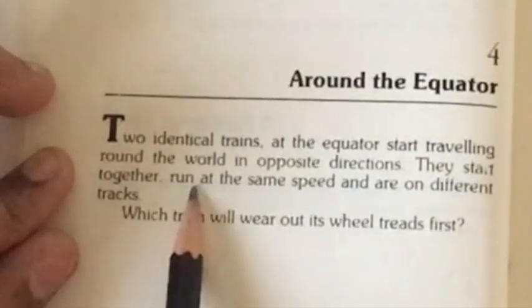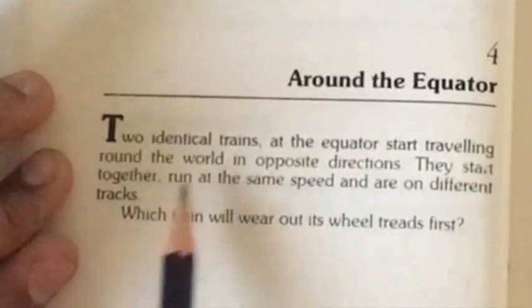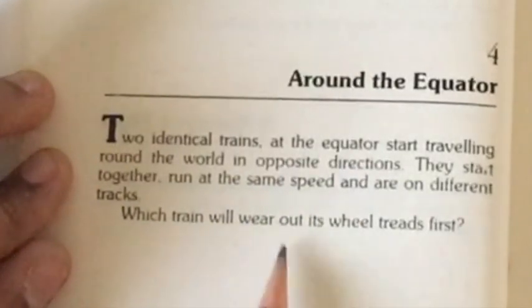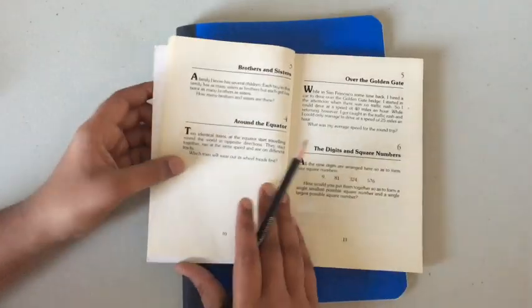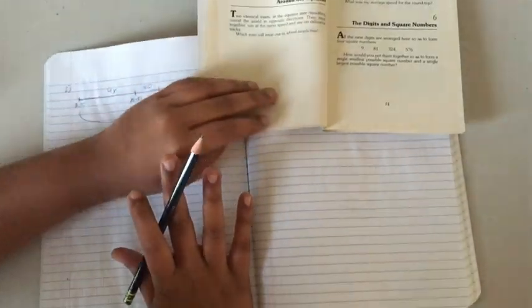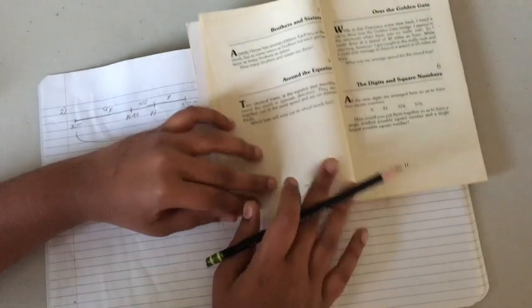They start together, run at the same speed, and run on different tracks. Which train will wear out its wheel treads first? So this is a medium puzzle because you also need to know some physics.